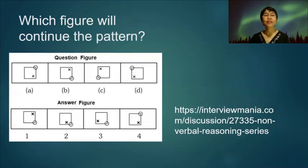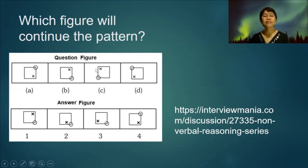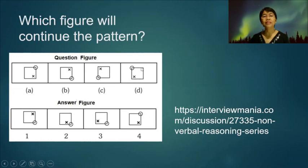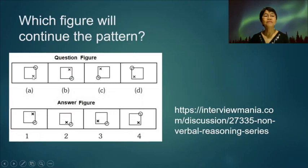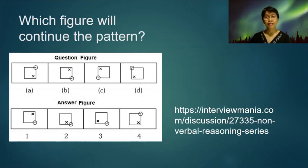Which figure will continue the pattern? We have here a square and there is a small circle which moves in a clockwise direction. So we expect that after figure D, the circle will be in the next corner. The X is moving in a counterclockwise direction, so we expect that after figure D the X will be in this corner. The answer is number four.